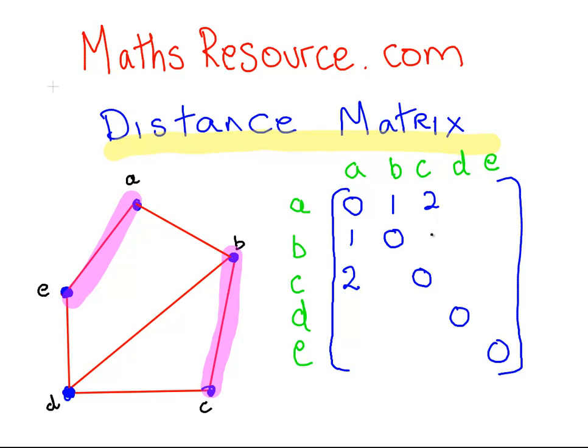The distance from B to C, you can see it clearly there. It's just 1, one edge. There we go. So, A to D is 2. 2 there, 2 there.